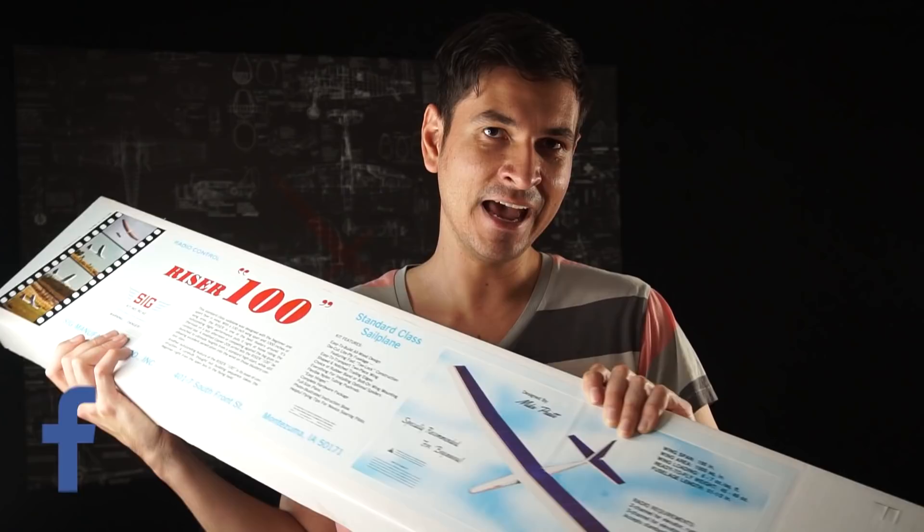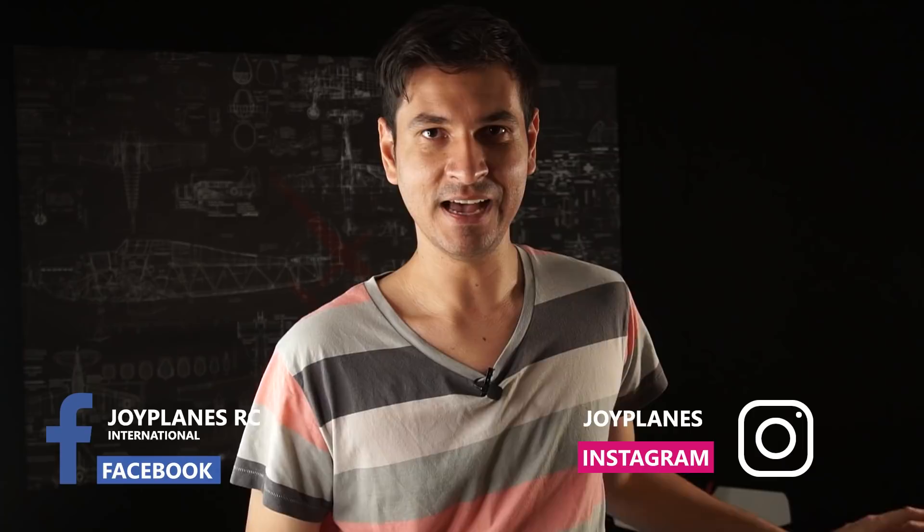So it is the Riser 100—100 inches in wingspan, equivalent to 2.5 meters. The box is not that big because everything comes as raw material: balsa wood, plywood, and spruce. I have to also add the electronics like servos, battery, and my radio system, and some covering. Let's get started with this build, it's going to be really cool!